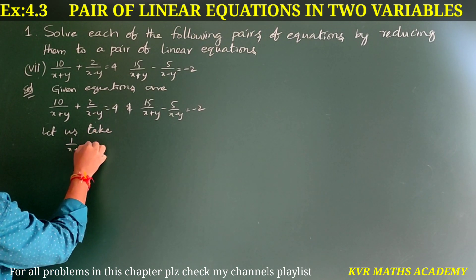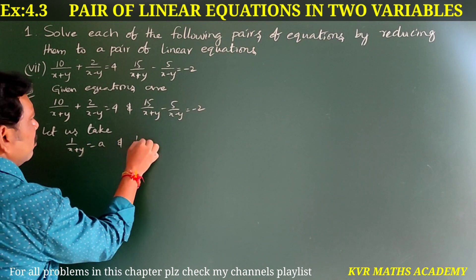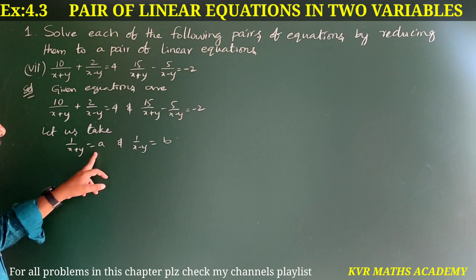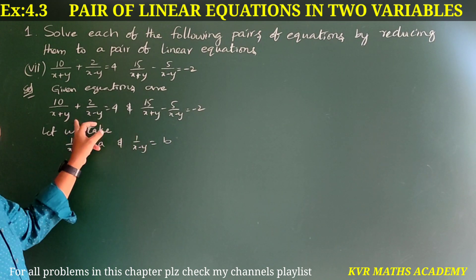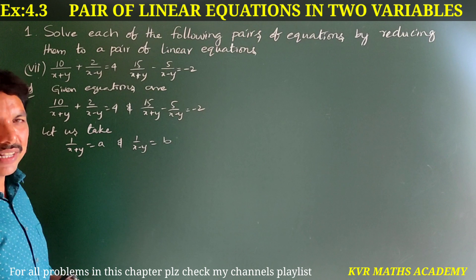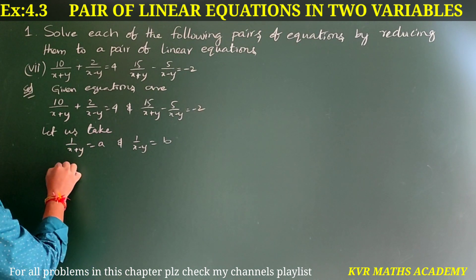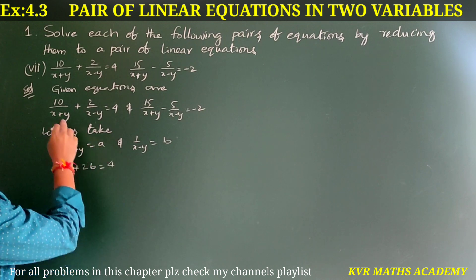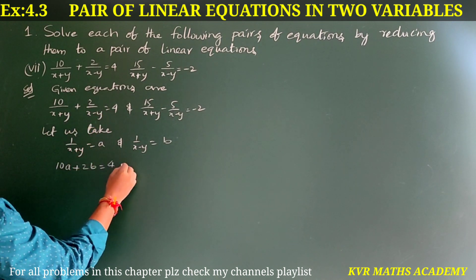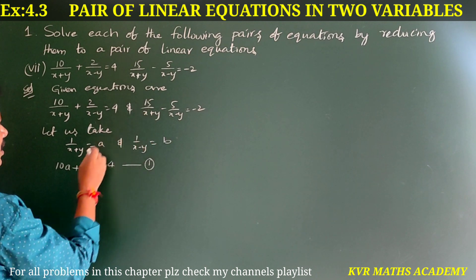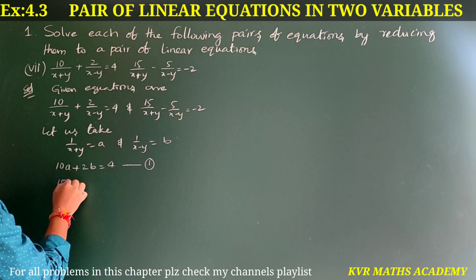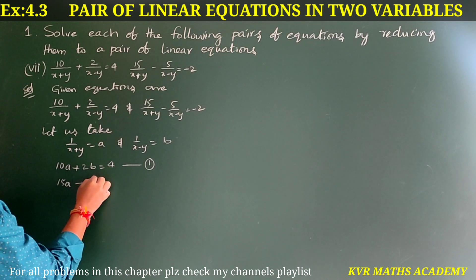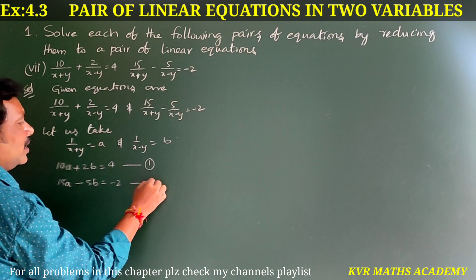Let 1/(x+y) = a and 1/(x−y) = b. Substituting a and b into the two equations and rewriting: the first becomes 10a + 2b = 4 (equation 1), and the second becomes 15a − 5b = −2 (equation 2).